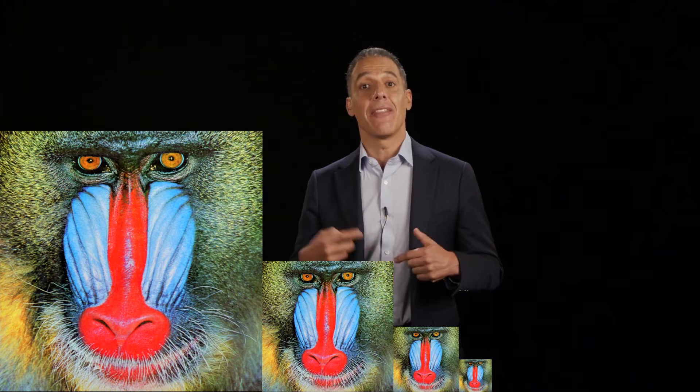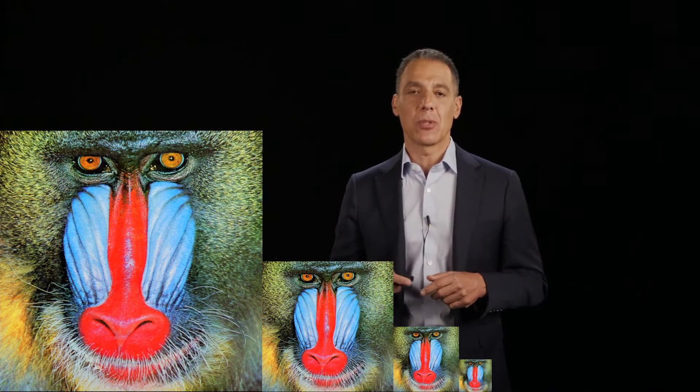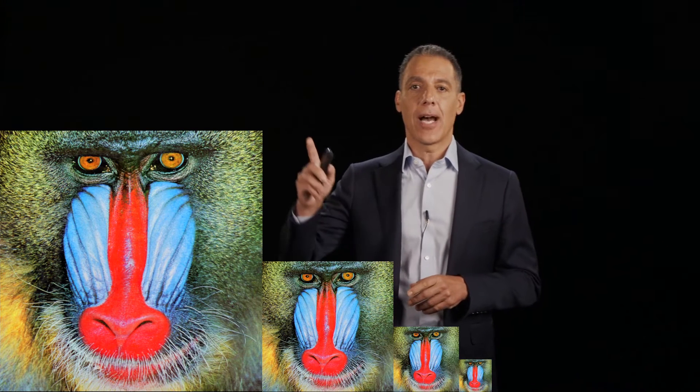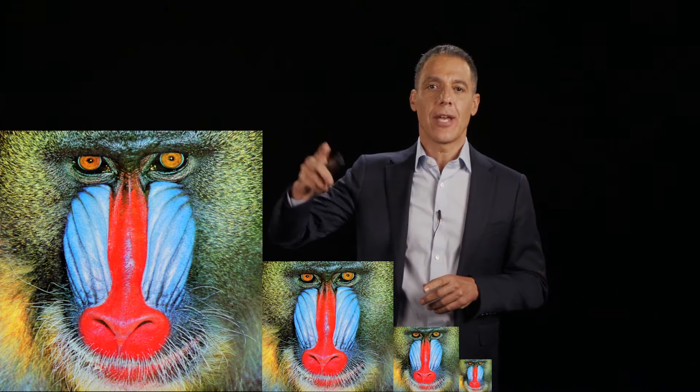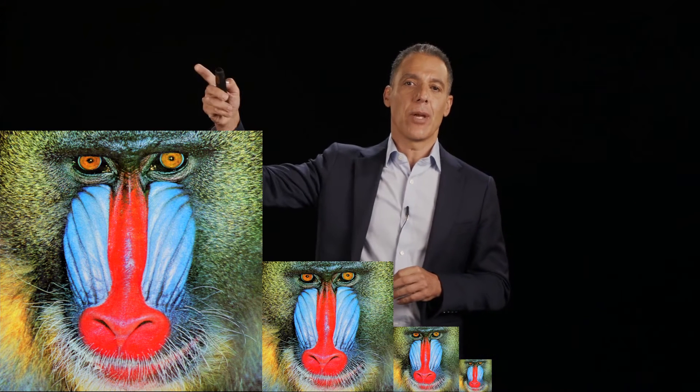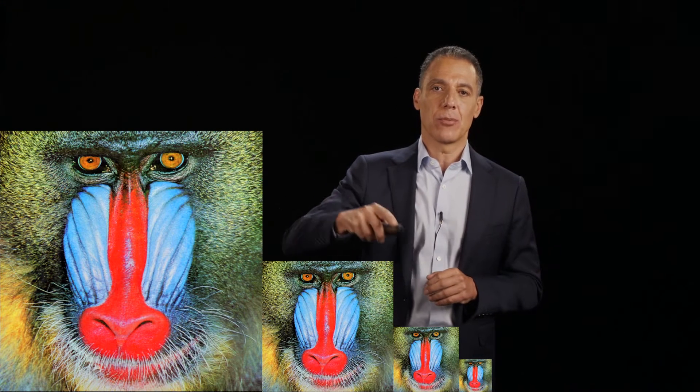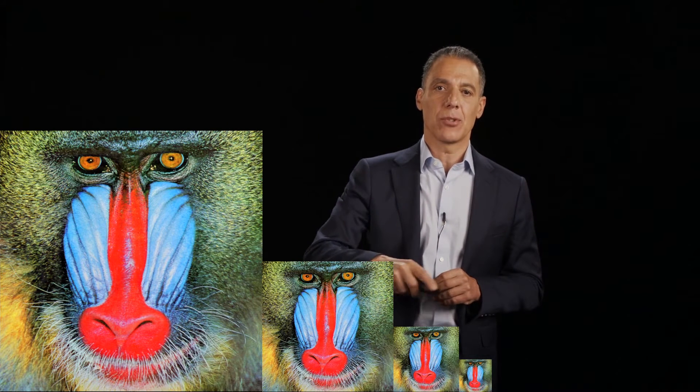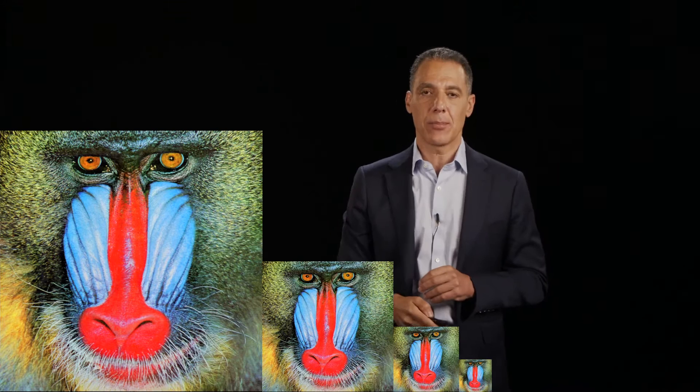We'll look at the Fourier representation of it, and then we'll look at some code for generating this. This should look familiar — this is the Gaussian pyramid. We've got our high resolution over here, then half resolution, half resolution, half resolution. The way we did that is: blur, downsample, blur, downsample, blur, downsample.